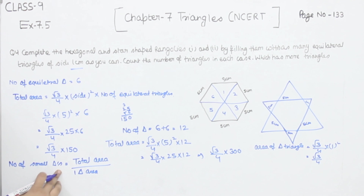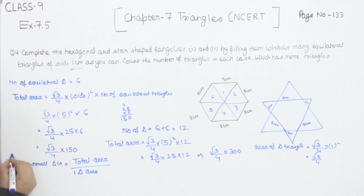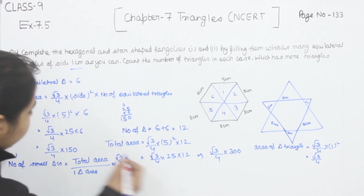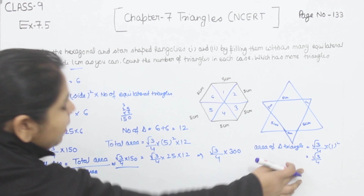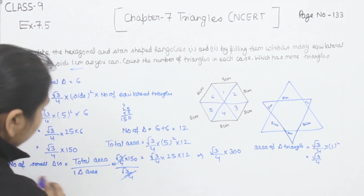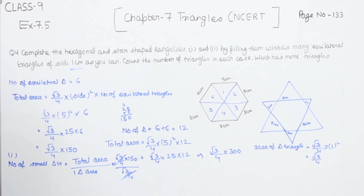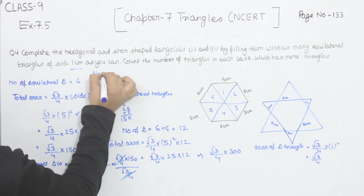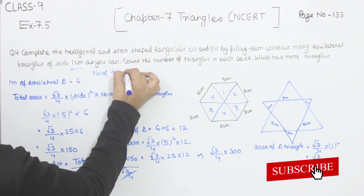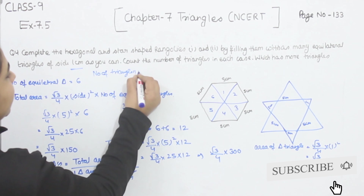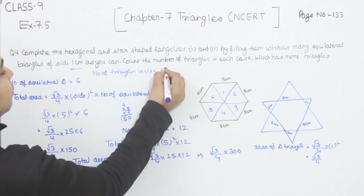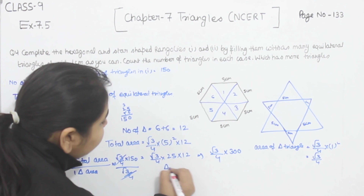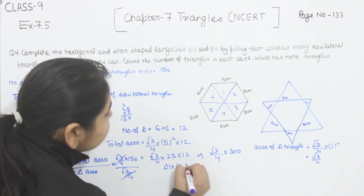For the hexagonal shape: the area is root 3 by 4 × 150, divided by root 3 by 4. So the hexagonal shape has 150 triangles. Number of triangles in the first one is 150. Now we are going to find out the triangles in the star-shaped rangoli.